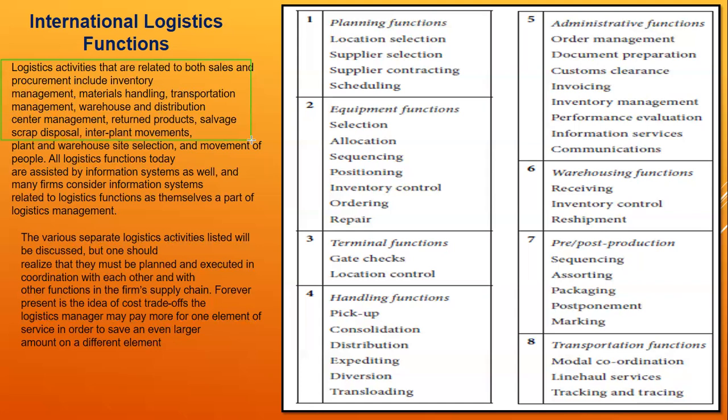Next is salvage and scrap disposal — whatever scrap or wastage is generated in the factory should be reused and not thrown out. Inter-plant movement means if there are 10 factories in India and one plant's raw material inventory is not available, they transfer raw material from one unit to another. Plant and warehouse site selection also needs to be done carefully, choosing locations based on infrastructure availability such as roads and other facilities.